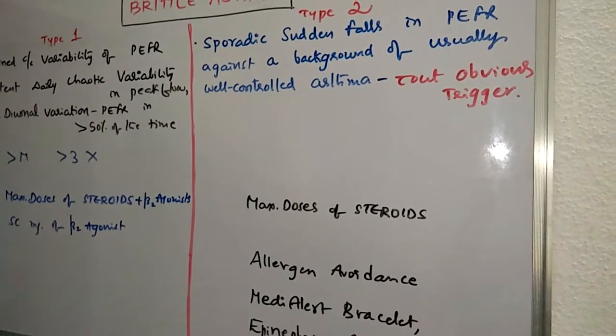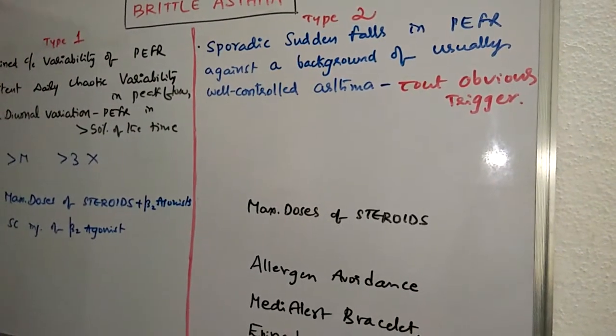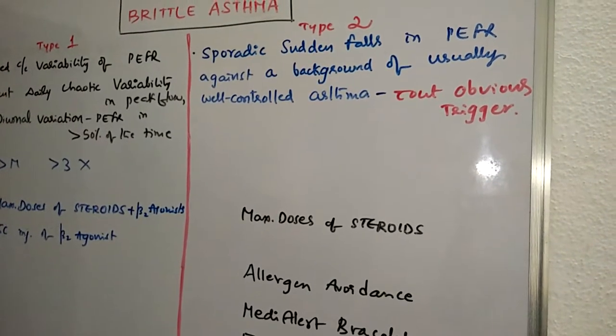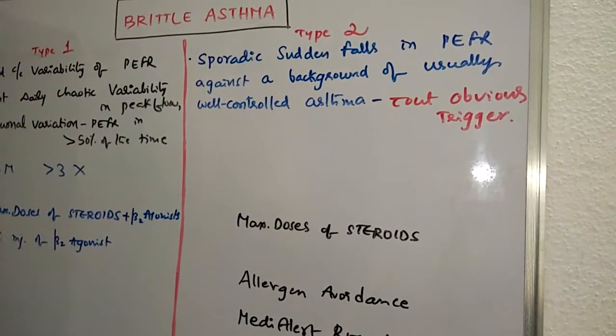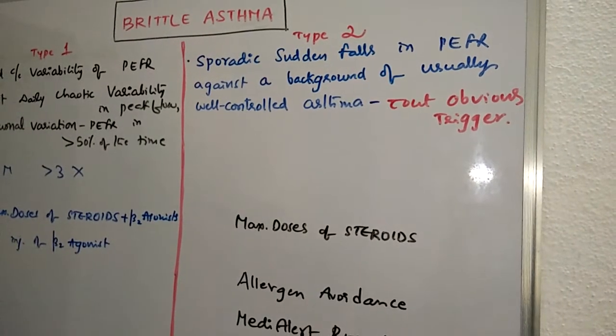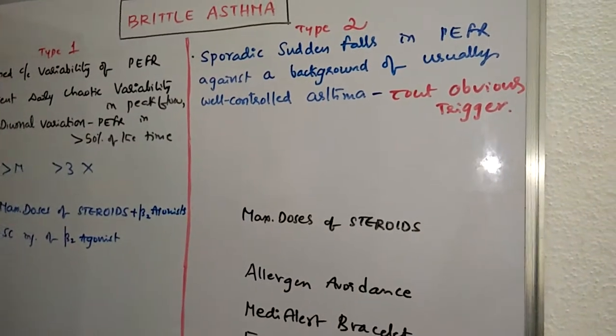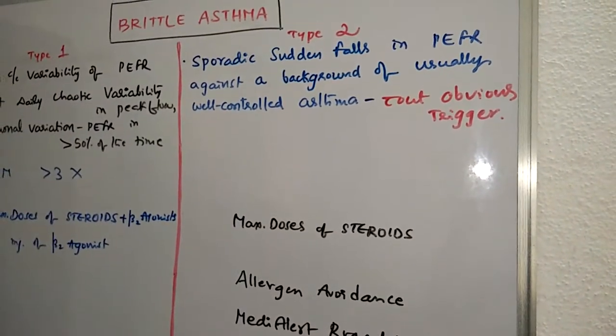Brittle asthma is one of the unstable subtypes of difficult to treat asthma, a term used to characterize the less than 5% of asthma cases that do not respond to maximal inhaled treatment, including high doses of steroids combined with additional therapies such as long-acting beta-2 agonists like salmeterol and formoterol.